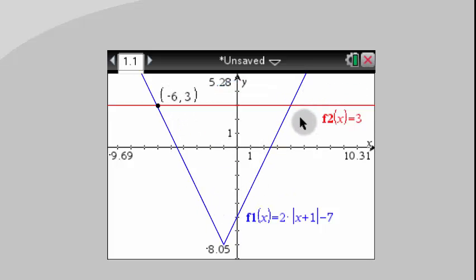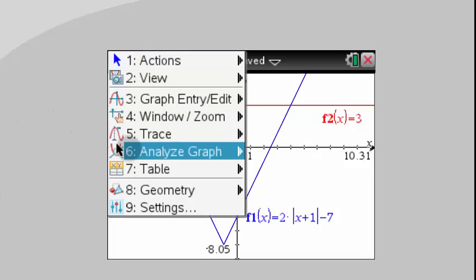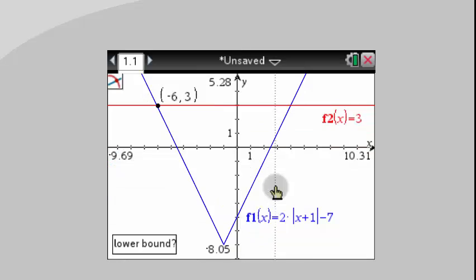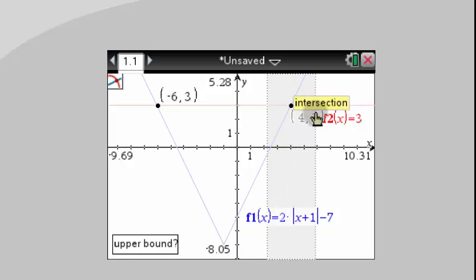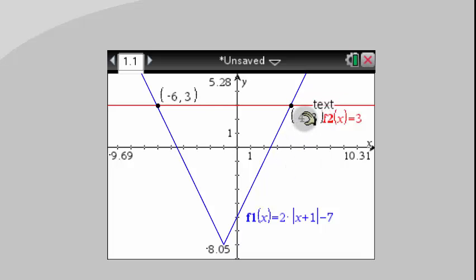I'm going to find the next point right there. Same trick. Hit Menu, Analyze Graph, Intersection. Again, it's saying, what's the lower bound? So for this point, I'd say the lower bound is somewhere to the left. The upper bound is somewhere to the right of that point. And it gives me the location of that intersection. So I've got these two. And so I'm going to remember those values.